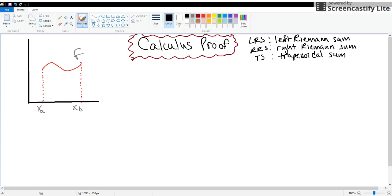Hello everybody and welcome to a calculus proof. Today we will be proving that the average of the left and right Riemann sums is equal to the trapezoidal sum of a function.